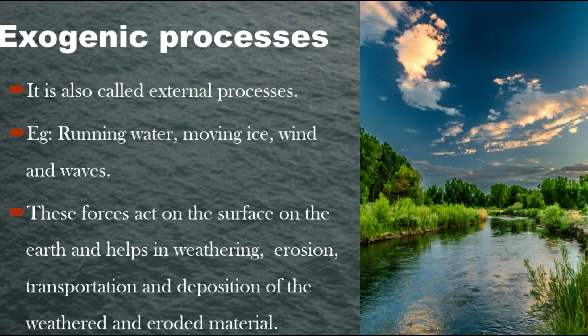These two processes are: the endogenic process, which happens within the earth or inside the earth, and the exogenic process, which happens outside the earth or on the surface of the earth — external forces. These two processes cause a lot of change on the surface of the earth, and that is why we have different landforms on the earth.